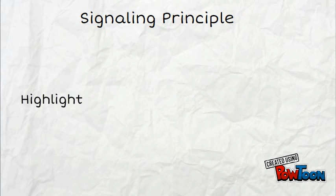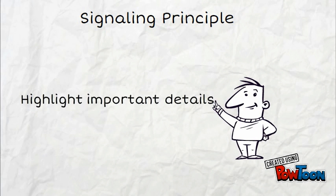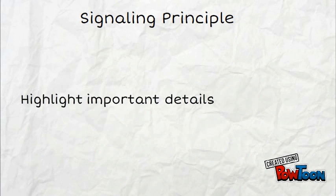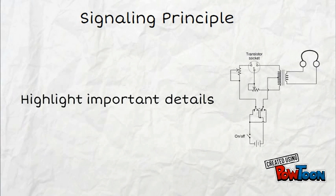Next is signaling. When providing written text, you can highlight what is most important for the learner to know. When describing an electrical circuit with accompanying graphic, you could highlight the name of the components or the picture of the components themselves when describing them.